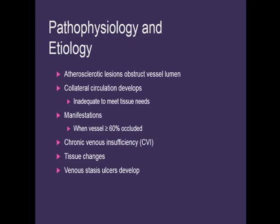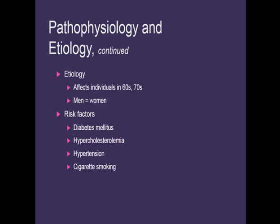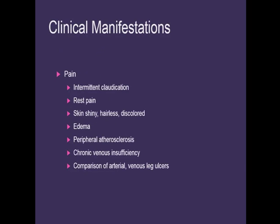Venous stasis ulcers are very difficult to treat because we're not getting enough blood to that area, which is what's needed to bring nutrients to heal wounds. Things that can cause peripheral vascular disease are smoking, hypertension, high cholesterol, diabetes, positive family history, being overweight, physical inactivity, being over age 50, and jobs involving long periods of standing or sitting.